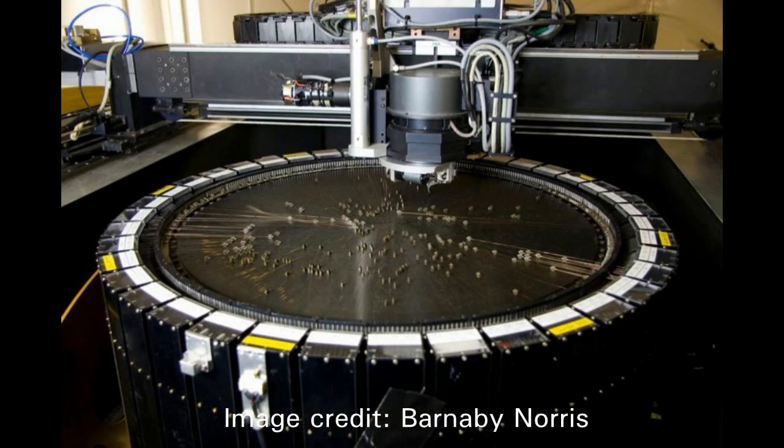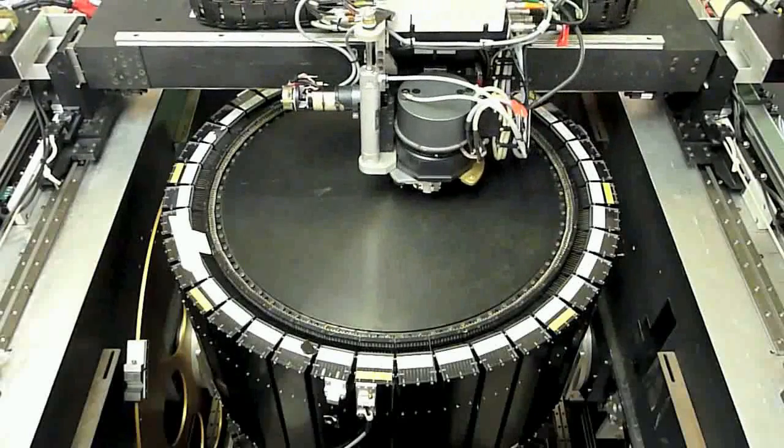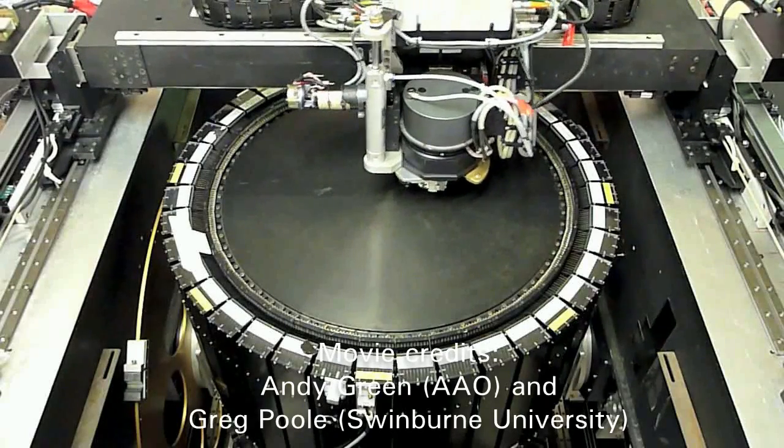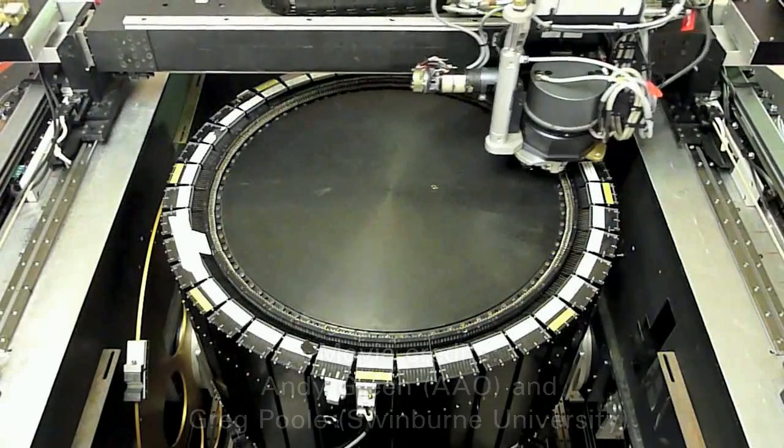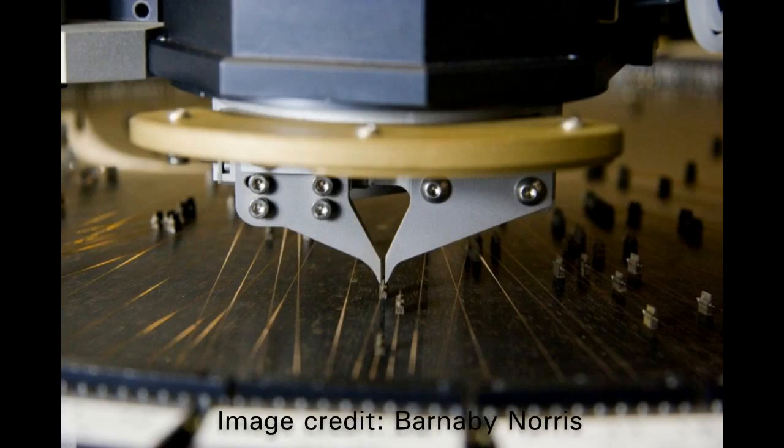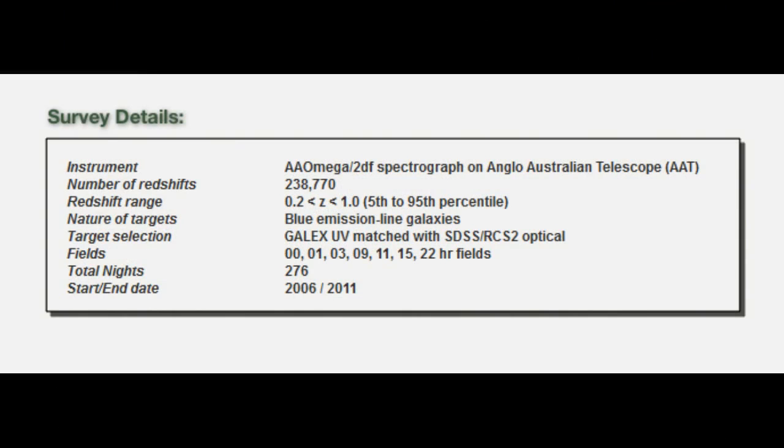The 2dF instrument consists of 392 fibers, each capable of observing a galaxy, and a robotic arm to move them into position. The final survey covers 1,000 square degrees of sky and contains more than 200,000 galaxies. It probes the same cosmic volume as a cube 3 billion light-years on a side. This makes it the largest survey ever used for this type of measurement of the large-scale universe.